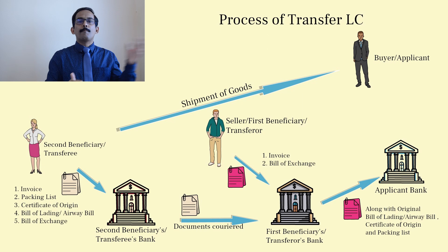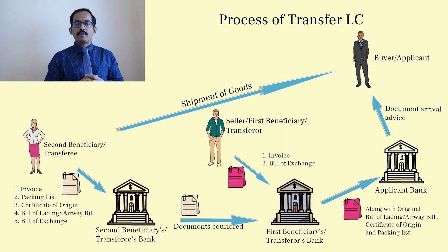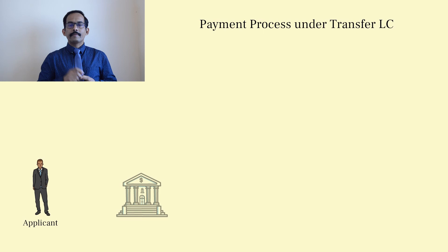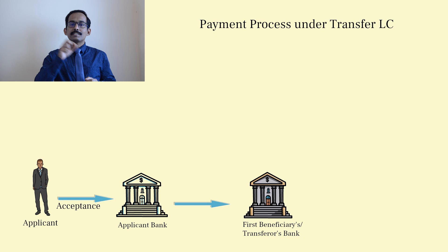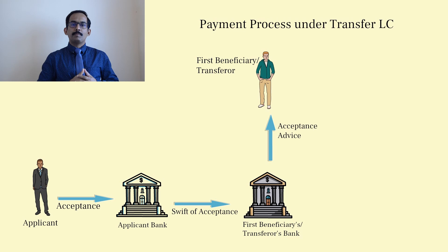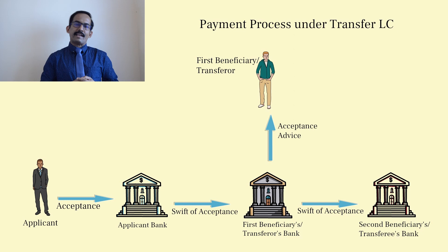The applicant bank intimates the applicant regarding the document arrival. If the documents are in agreement with the terms and conditions of the LC, the applicant proceeds to accept the documents and collects the originals from the applicant bank to facilitate the shipment clearing process. Once documents are accepted, the applicant bank sends the acceptance advice to the first beneficiary bank, which intimates the first beneficiary. The first beneficiary bank then sends the acceptance advice to the second beneficiary bank for the documents submitted under the transfer LC, and the second beneficiary bank intimates the second beneficiary.